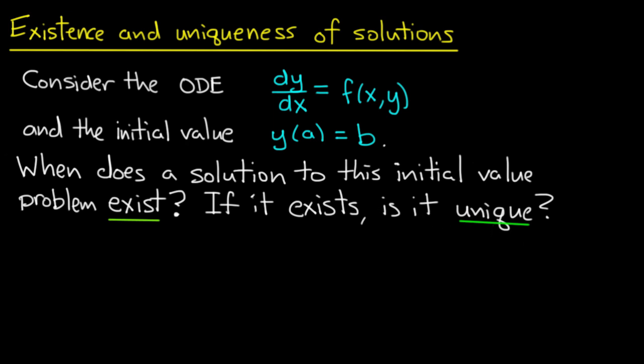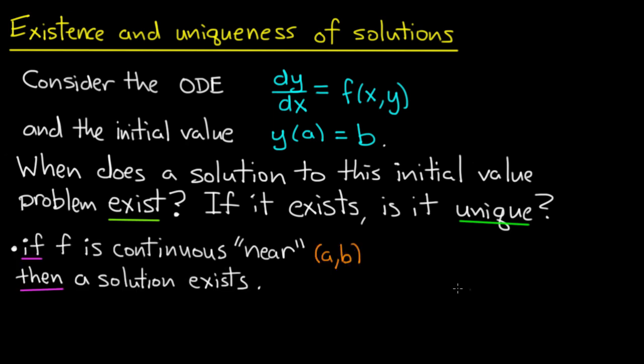Fortunately we have easily testable sufficient conditions that will tell us when a solution exists and when it is unique. First of all, if f is continuous near the point (a,b), then a solution exists.